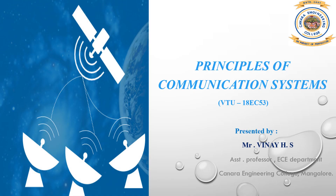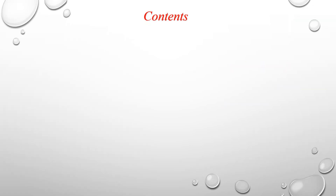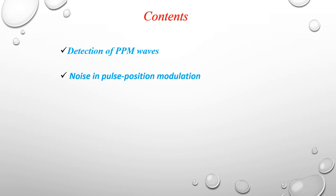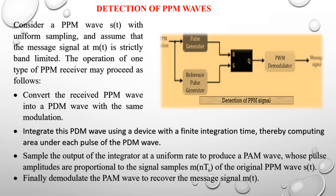Hello everyone, welcome to the Principles of Communication Systems lecture series. Today we will discuss how to detect PPM waves. Let's consider a PPM wave s(t) with uniform sampling, and assume that the message signal m(t) is strictly band-limited. The operation of a PPM receiver may proceed as follows.